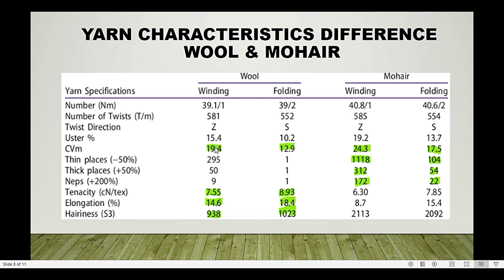Looking at yarn characteristics: U% (unevenness) for winding mohair fiber is comparatively high compared to wool. For folded yarn, mohair is also higher than wool. CVM follows the same trend — wool shows better CVM values than mohair, both for single and plied yarn.